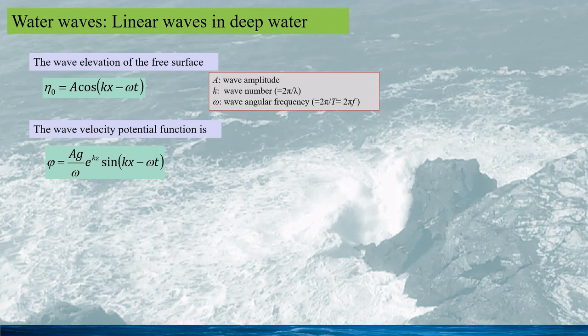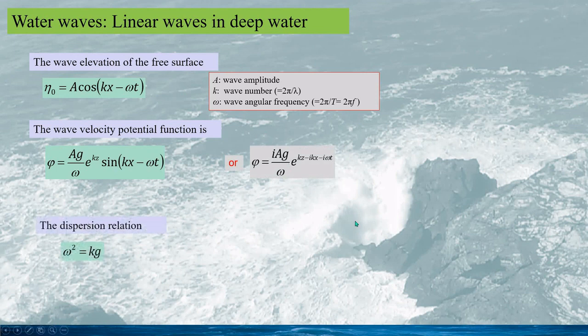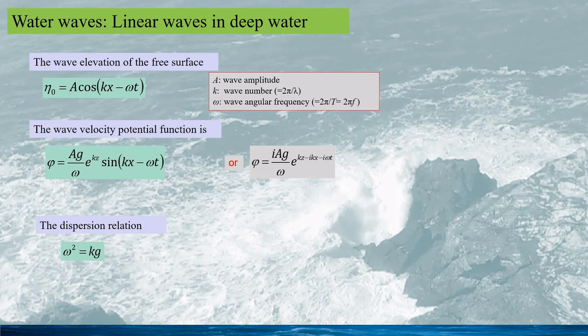The wave velocity potential function is given by this, or in a complex form as this, and an important relation called the dispersion relation is given by this. This dispersion relation links the wave frequency and the wave number, which indicates that waves of different frequencies would travel at different speeds.